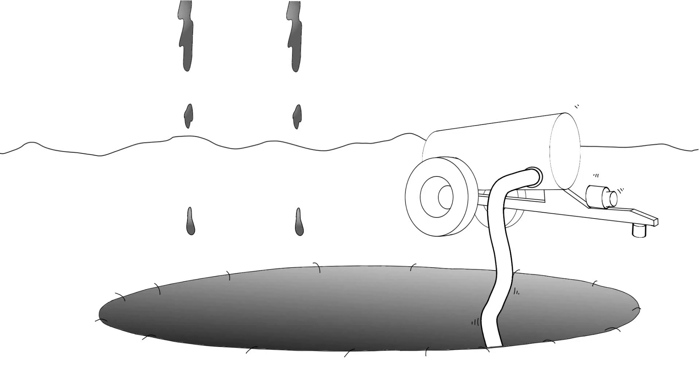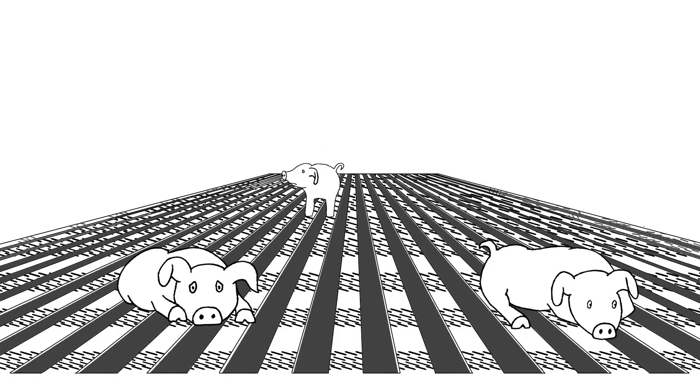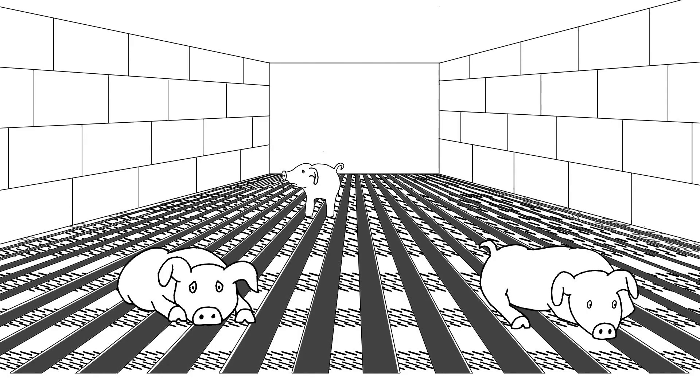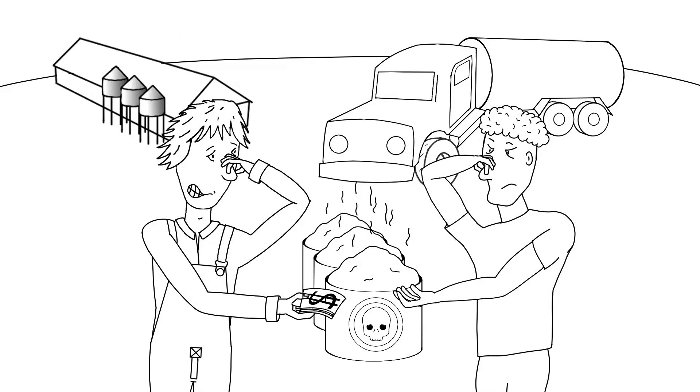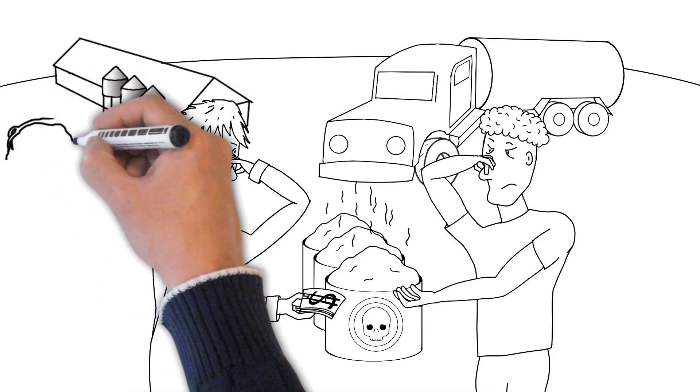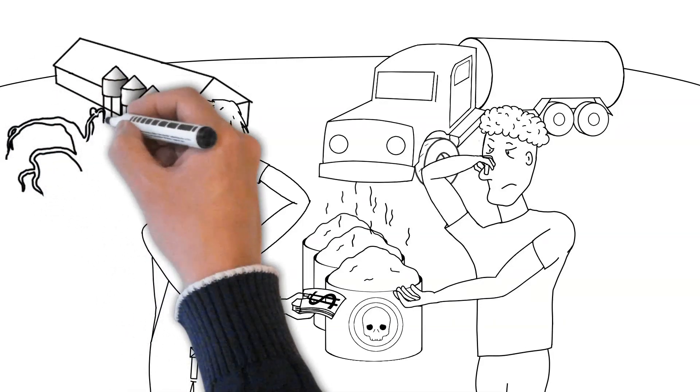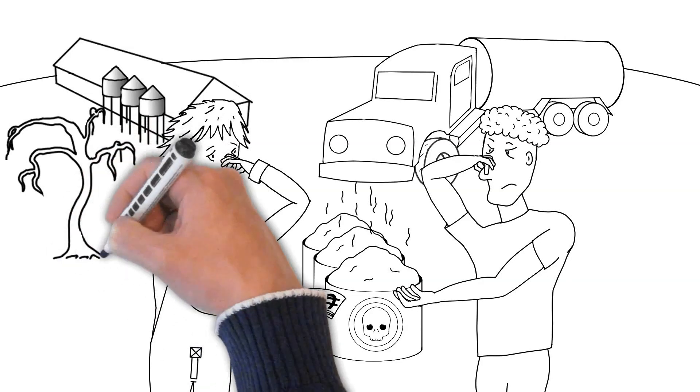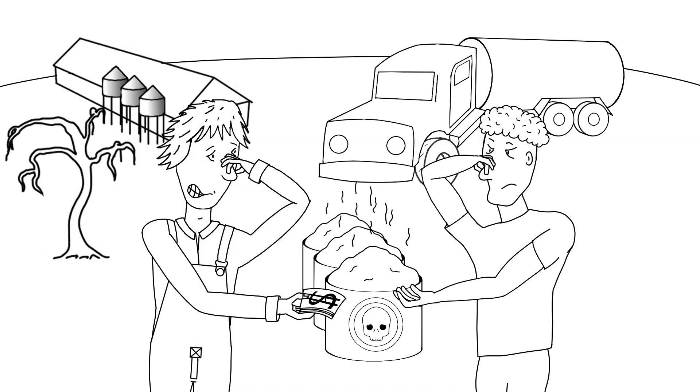For this all to work, pigs now were kept fully indoors on fully slatted concrete floors without any bedding at all. The degraded and stinky slurry would then be transported away from the farm, not only at a cost to the farmer, but also to the environment.